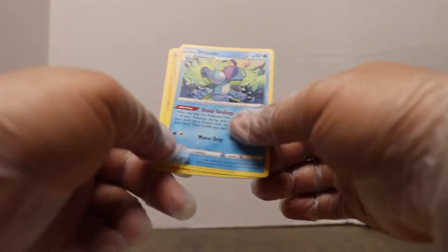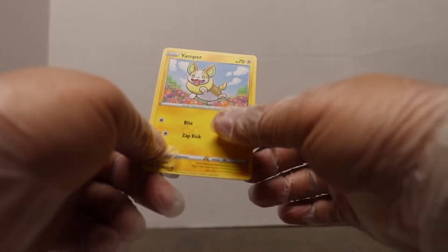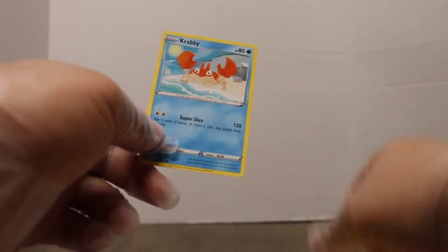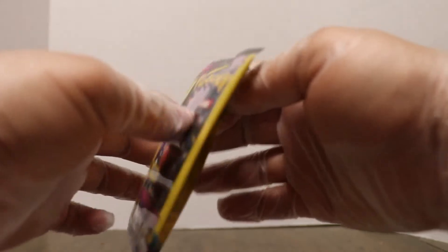We got Drizzly. Yamper. And, da-da-da-da! A Krabby to end it off. Woo-hoo! Krabby. Yay. That is just lovely.